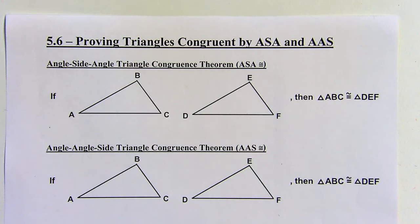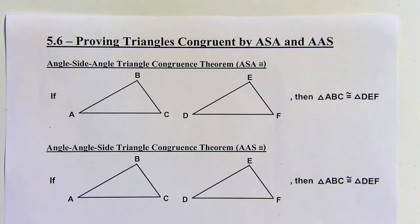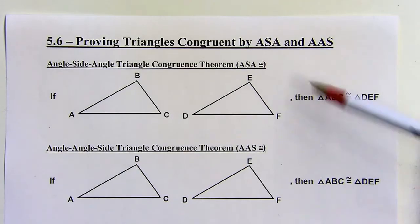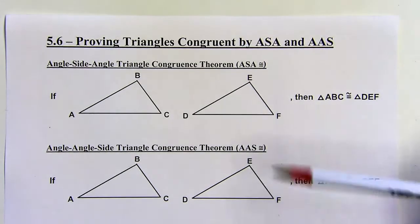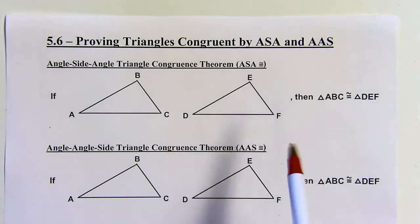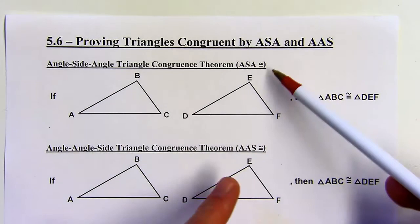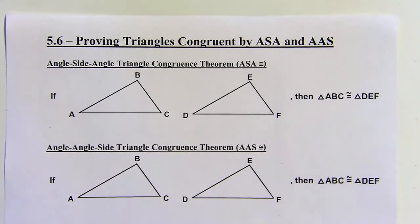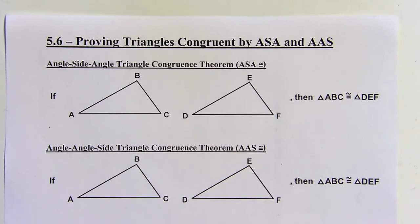Here's 5.6 Proving Triangles Congruent by ASA and AAS. So these are our last two triangle congruency theorems. They're very similar to each other, very easy to get confused, but they are definitely different.